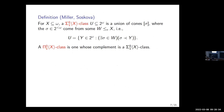Here is the first main definition. I want to relativize the notion of a pi-0-1 class to use an enumeration oracle — this was first done by Miller and Soskova in unpublished work. A sigma-0-1 class relative to X is a union of cones where each base comes from some set W which is E-reducible to X. In the regular Turing oracle case, W would be c.e. in X, but now we've changed it to E-reducible to X. A pi-0-1 class relative to X is one whose complement is a sigma-0-1 class relative to X.